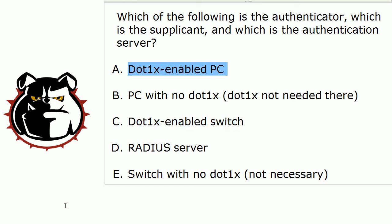So we've got our supplicant, we've got our authenticator, and then our authentication server is going to be the RADIUS server. The big details to remember beyond the correct answers are that you've got to have .1x running on both the switch — which is your authenticator — and the supplicant, which is your .1x enabled PC.